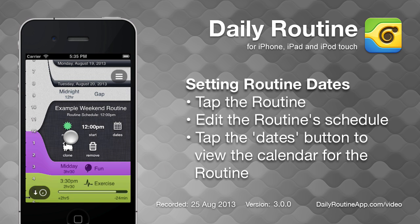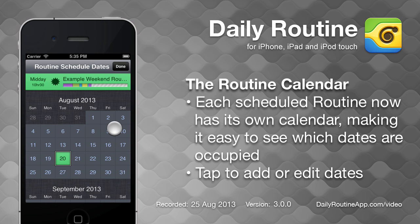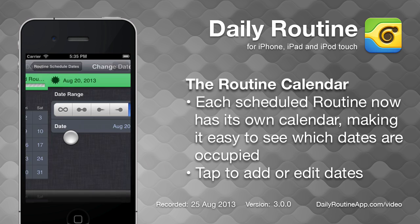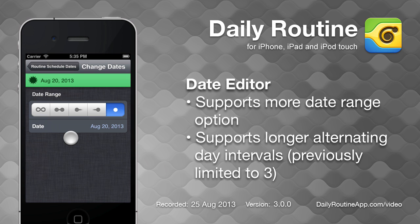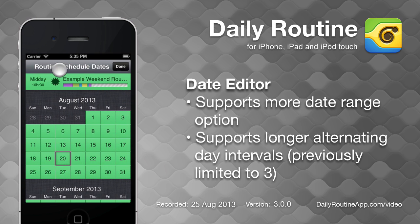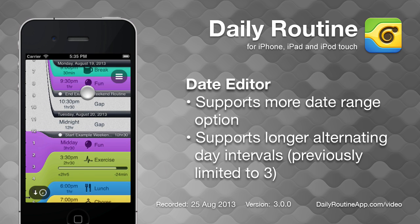Tap the Dates button to bring up the routine calendar. This calendar relates solely to this routine. We can change the date rule by tapping it and choosing Change Dates, where we see that the date editor has been refined to support even more scheduling options. When we return to the timeline, we see that the routine now repeats.